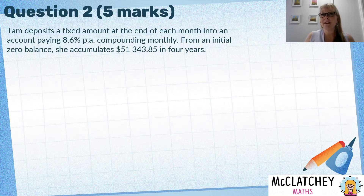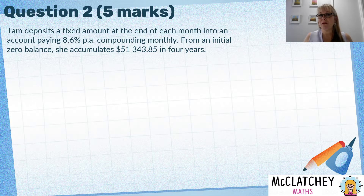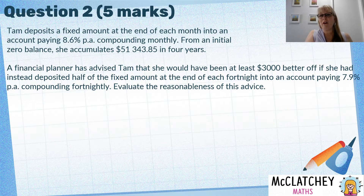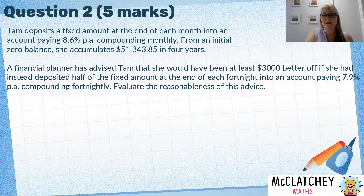It's worth five marks, so a good chunk of the paper. TAM deposits a fixed amount at the end of each month into an account paying 8.6% per annum compounding monthly. From an initial zero balance, she accumulates $51,343.85 in four years. A financial planner has advised TAM that she would have been at least $3,000 better off if she had instead deposited half of the fixed amount at the end of each fortnight into an account paying 7.9% per annum compounding fortnightly. Evaluate the reasonableness of this advice.